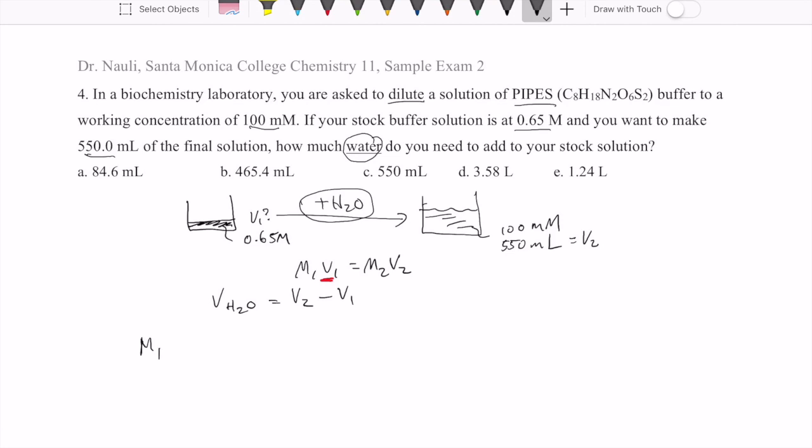We're going to do our M1 V1, M2 V2, and then solve for V1. So V1 is going to be M2 V2 over M1. And we'll just plug in some numbers here.